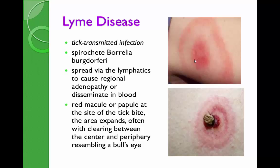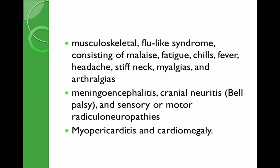Neurological abnormalities include meningoencephalitis, Bell's palsy, bilateral radiculoneuropathies. Cardiac manifestations include Wenckebach or third-degree heart block and myopericarditis with chest pain. In late disease, if untreated, patients develop arthritis with swelling of large joints such as the knees, low-grade unremitting fever, and encephalopathy with sleep disorders, mood changes, and memory disorders.